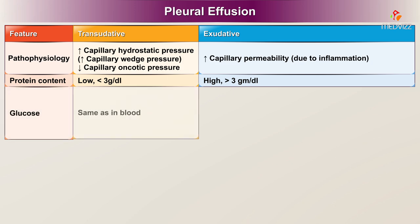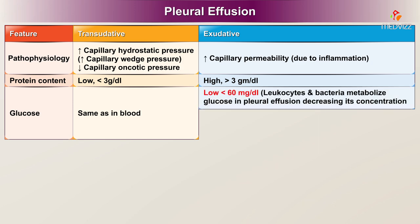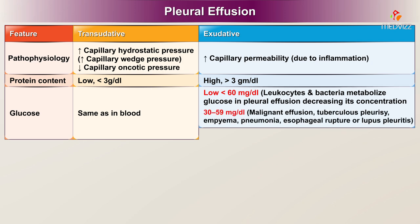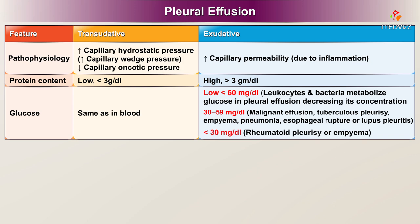Glucose in a transudate is the same as in blood. In an exudate it is low, less than 60 mg per deciliter, because leukocytes and bacteria mobilize glucose in the pleural effusion, decreasing its concentration. A glucose level of 30 to 59 mg per deciliter suggests malignant effusion, tuberculosis pleural effusion, tuberculosis pleurisy, empyema, pneumonia, esophageal rupture, or lupus pleuritis. Less than 30 mg per deciliter suggests rheumatoid pleurisy or empyema.